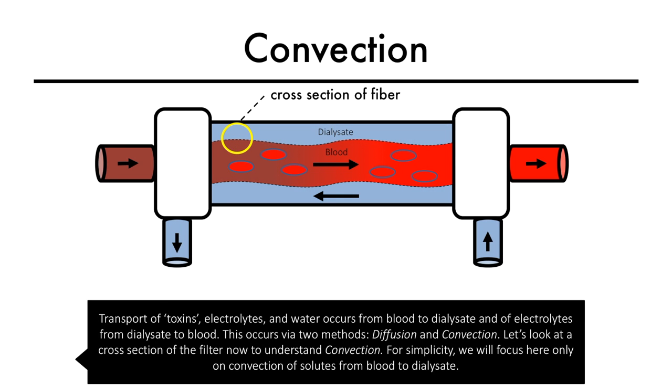Transport of toxins, electrolytes, and water occurs from blood to dialysate, and of electrolytes from dialysate to blood. This occurs via two methods: diffusion and convection.